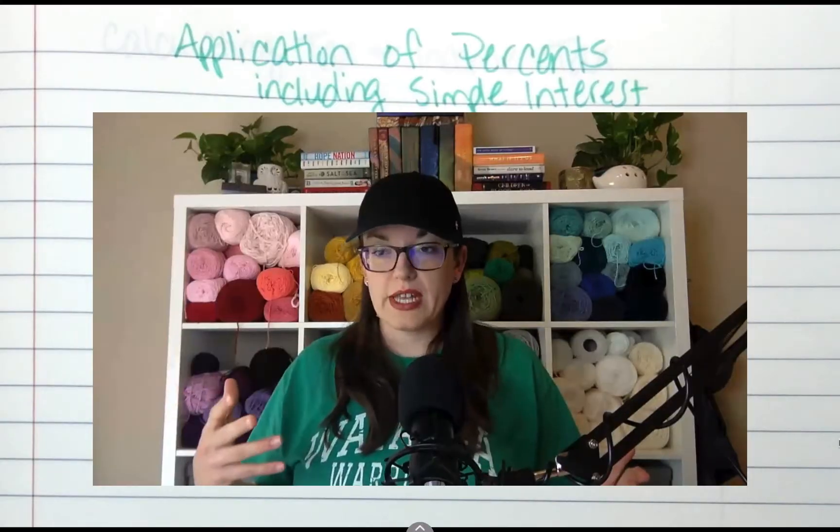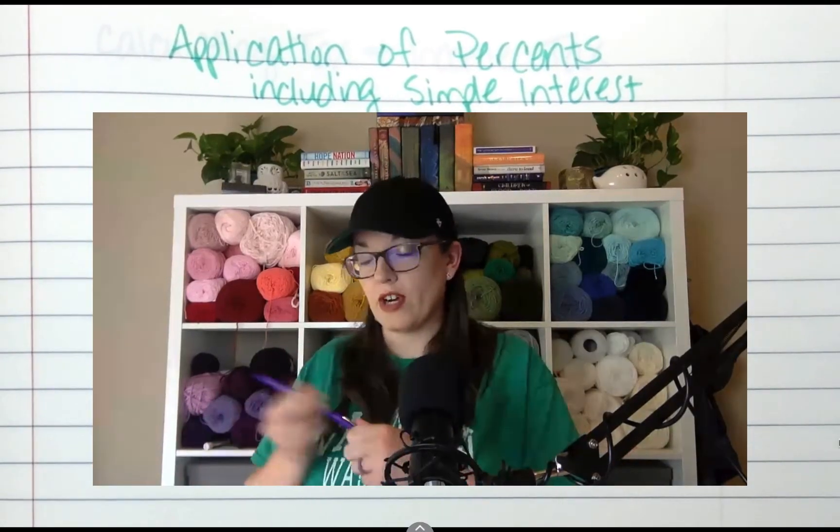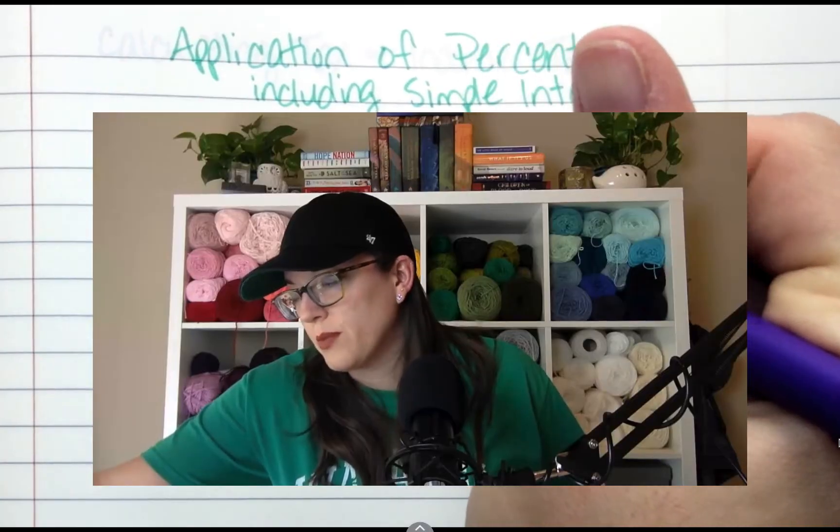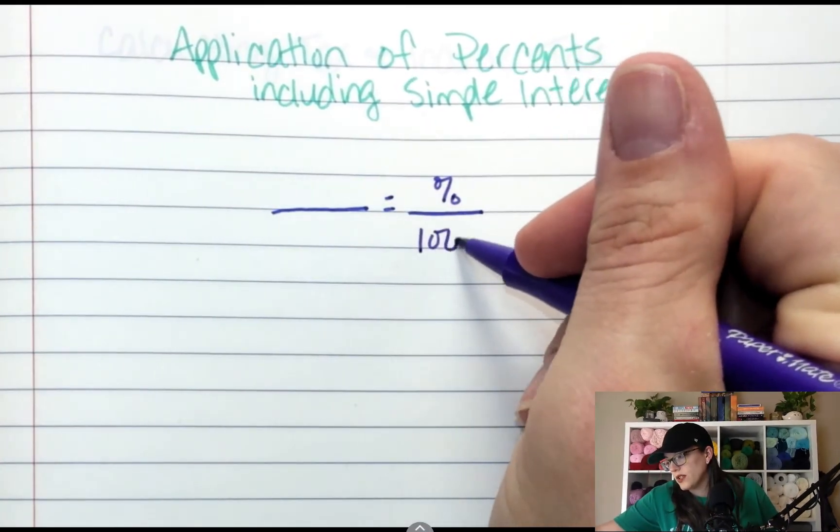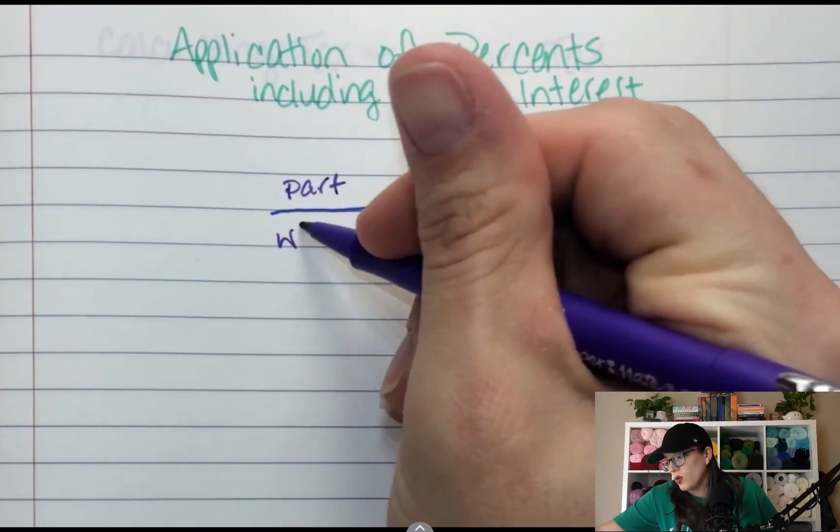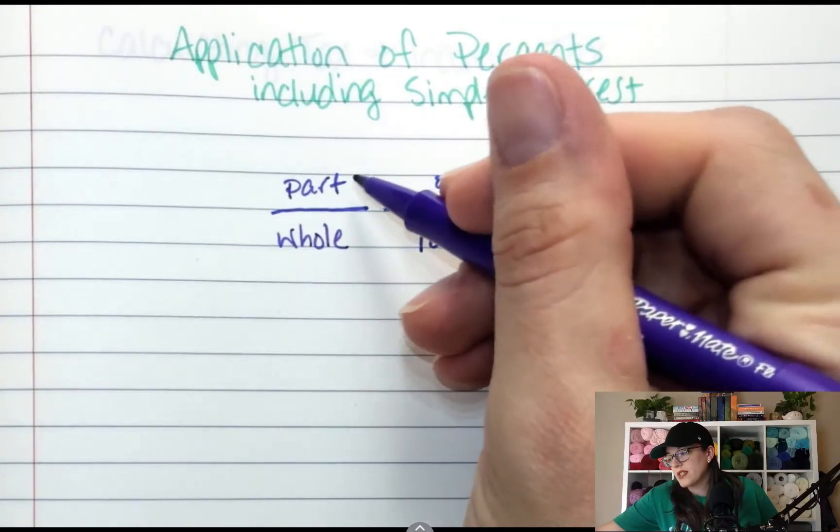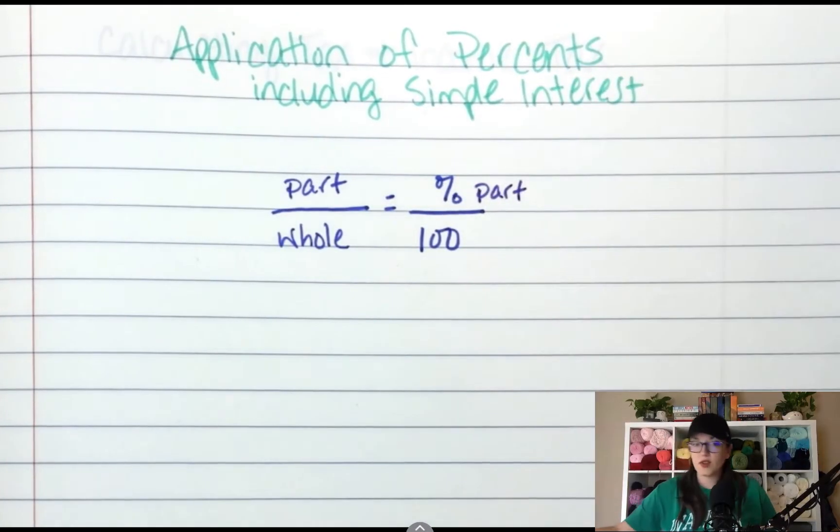So application of percents is basically being able to read a problem and know what to do with that percent. As a refresher there are two ways to deal with percents. You have the percent proportion where you put the percent over 100 and then this is the part over a whole. If this is the part then this is the percent of the part.